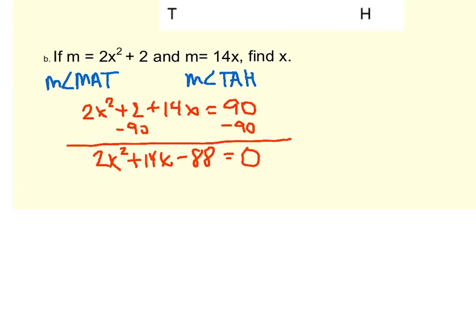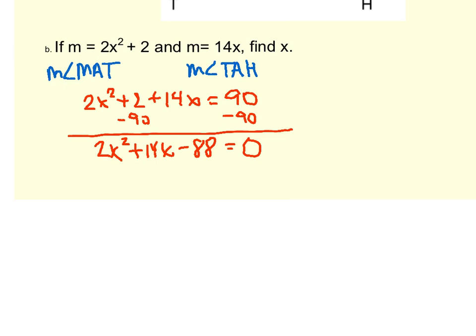Now, I'm going to move my screen up a little bit here. The next thing we're going to do is factor. Hopefully you recognize that there is a GCF, a common factor of 2 we can factor out. If we factor out 2, what's left is x squared plus 7x minus 44.